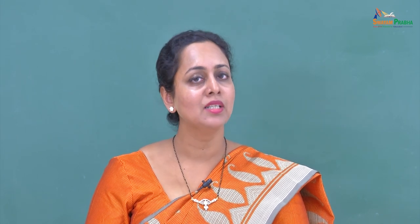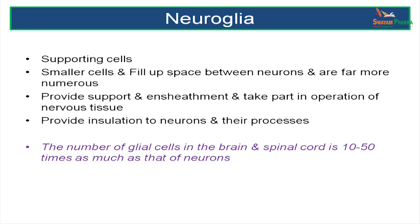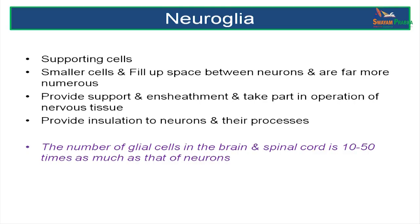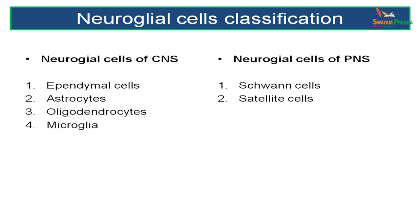Now let us proceed to the neuroglial cells. Neuroglial cells are supportive cells — they are smaller cells and they are the chair on which the neuron sits. They provide insulation, protection and help in conduction of nerve impulses. In fact, the number of glial cells in the brain and spinal cord is 10 to 50 times that of the neurons. Neuroglial cells are classified based on whether they lie in the central or peripheral nervous system. In the CNS: ependymal cells, oligodendrocytes, microglia and astrocytes. In the PNS: Schwann cells and satellite cells.